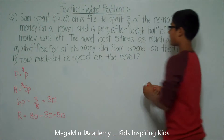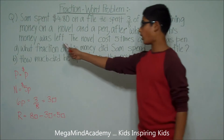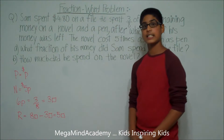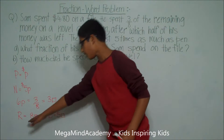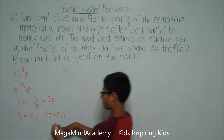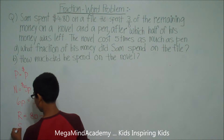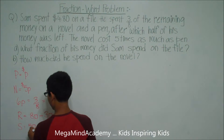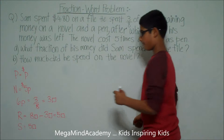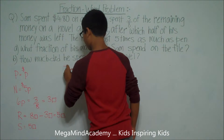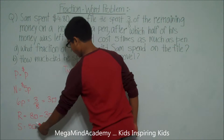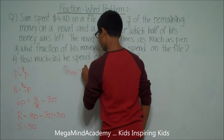We know that half of his money was left. So if he had a remaining amount of five units, then he also spent five units. S for spent is equal to five units. This means the total money at first is equal to five units plus five units, which is equal to ten units.